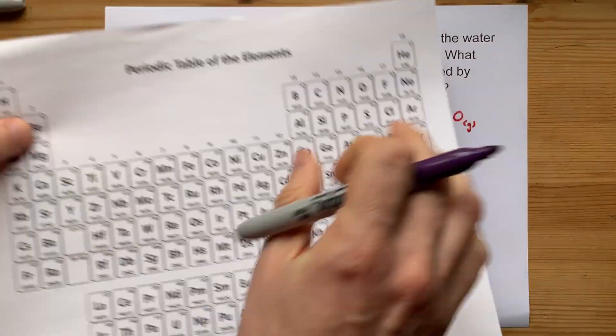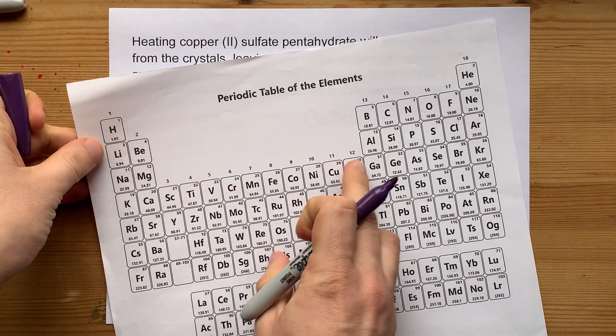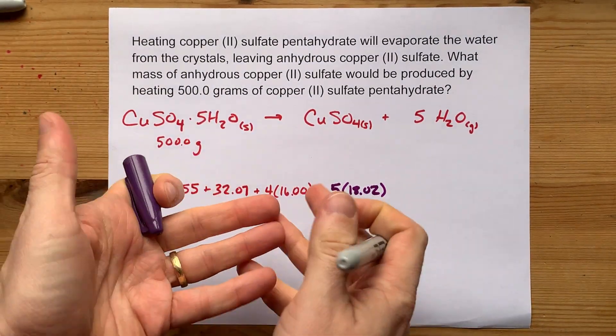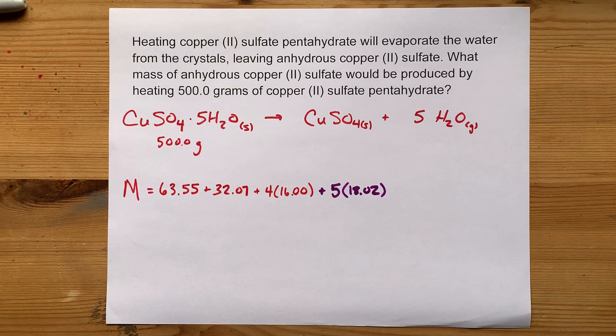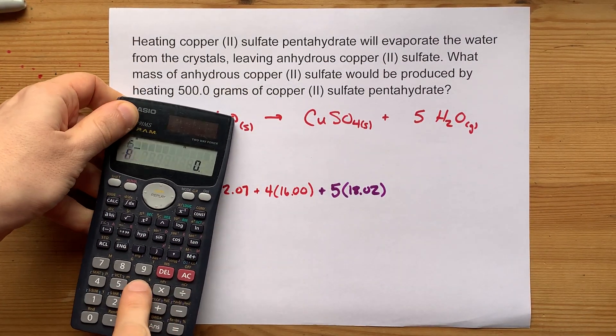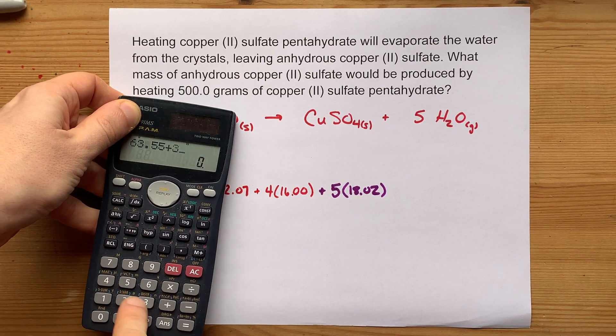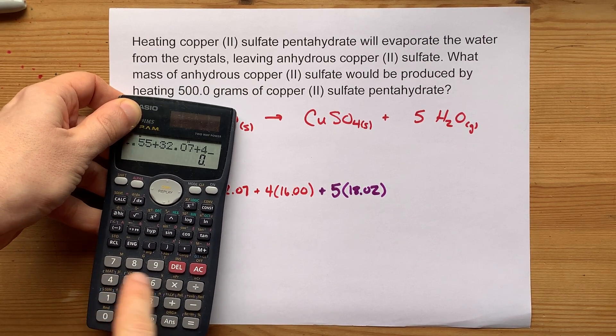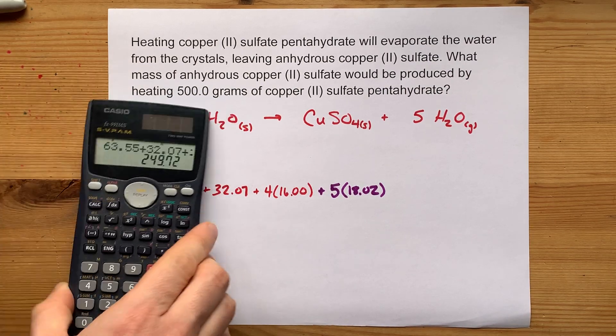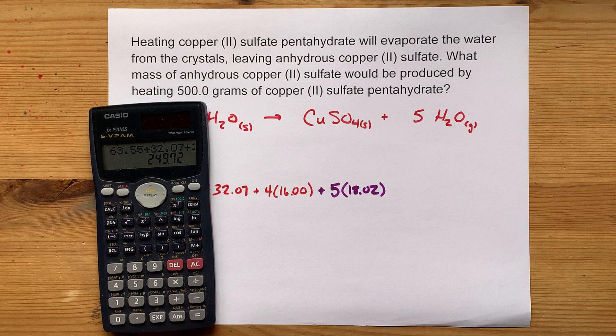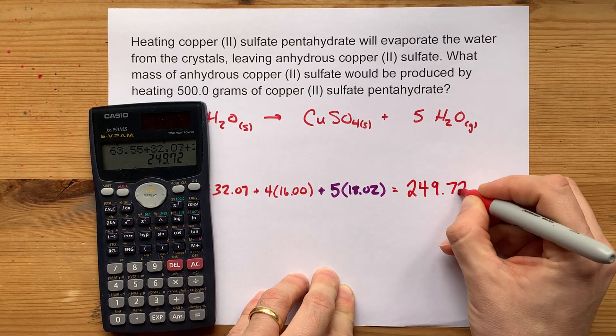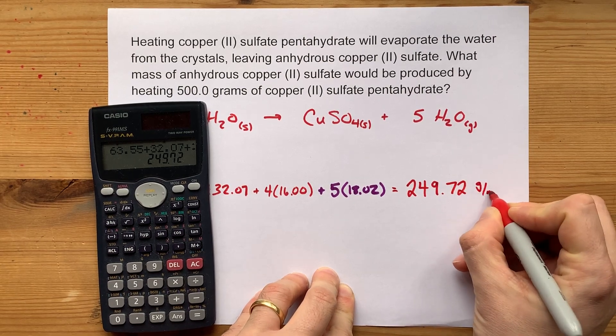Now, if you don't believe me, you can add up two hydrogens and an oxygen, H2O. You'll always get 18.02. At some point, you'll just have memorized that. And you'll get the total molar mass of the whole compound. 63.55 plus 32.07 plus four sixteens plus five 18.02s. The whole compound here has a molar mass of 249.72 grams per mole.